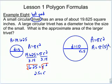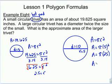Using the area formula for the large trivet: A equals pi r squared. With a radius of 5, that's pi times 5 squared, which is pi times 25. Pi times 25 equals 78.5 inches squared.